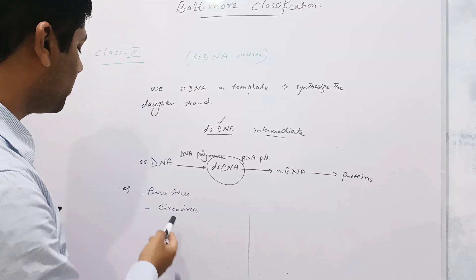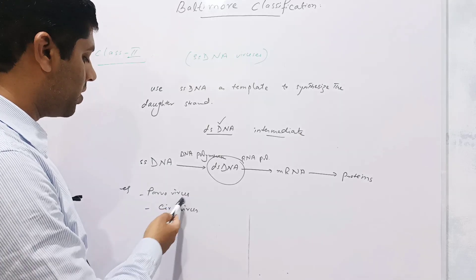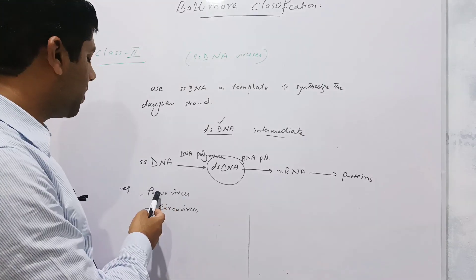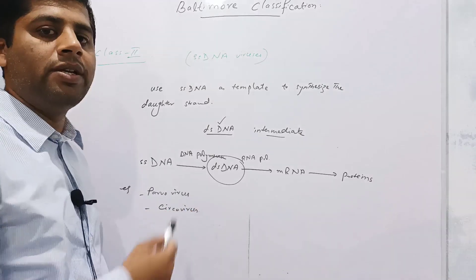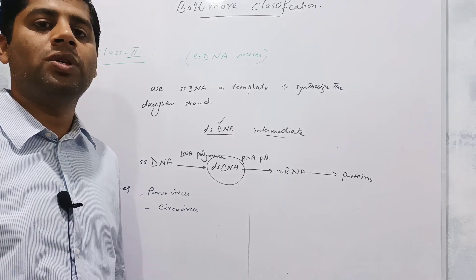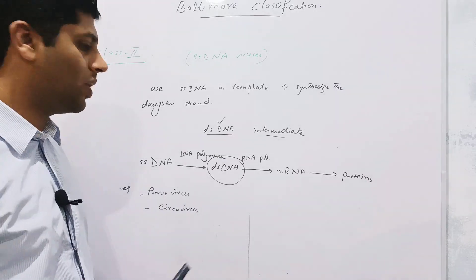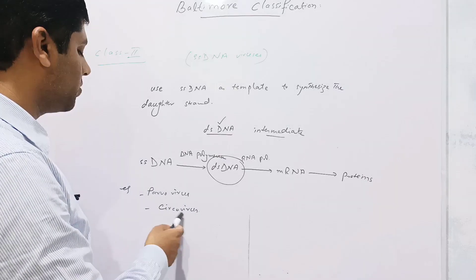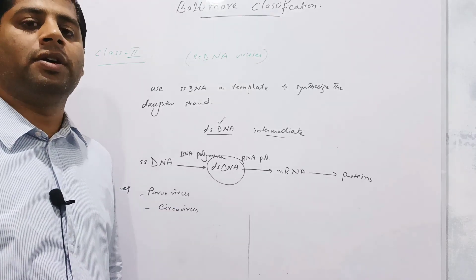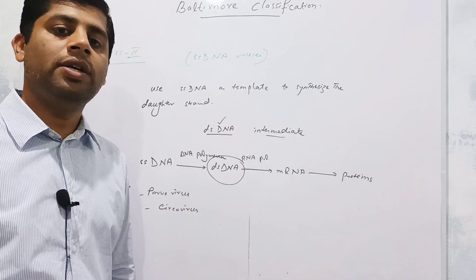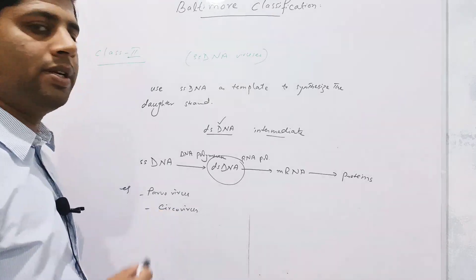Examples of Class II single-stranded DNA viruses include parvovirus and circovirus. Parvovirus causes gastrointestinal tract infections and viral diarrhea. Circovirus causes infectious anemia and is also known to cause feather and beak disease.